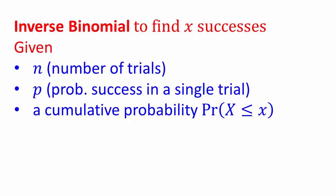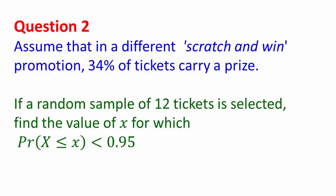The other problem we're going to look at is inverse binomial to find X successes when you're given the number of trials, the probability of success in a single trial, and a cumulative probability. In this question, assume that in a different scratch and win promotion, 34% of tickets carry a prize. If a random sample of 12 tickets is selected, find the probability of X for which probably that X is less than or equal to the value X is less than 0.95.